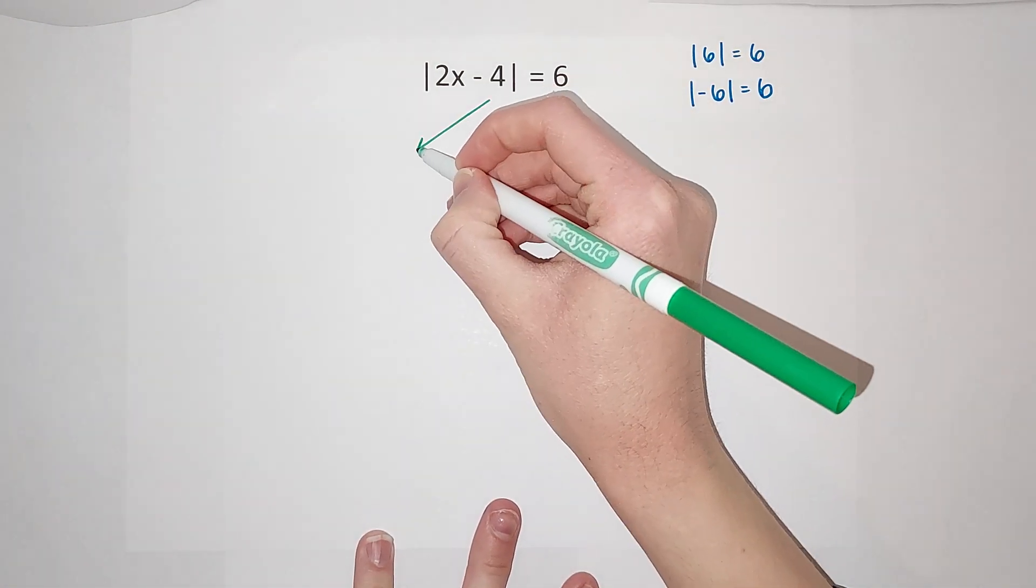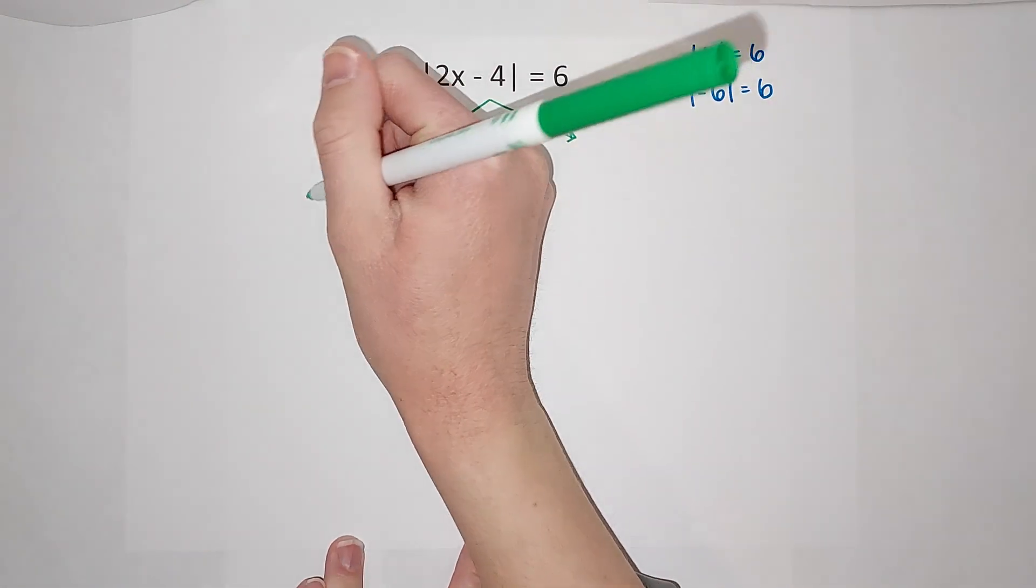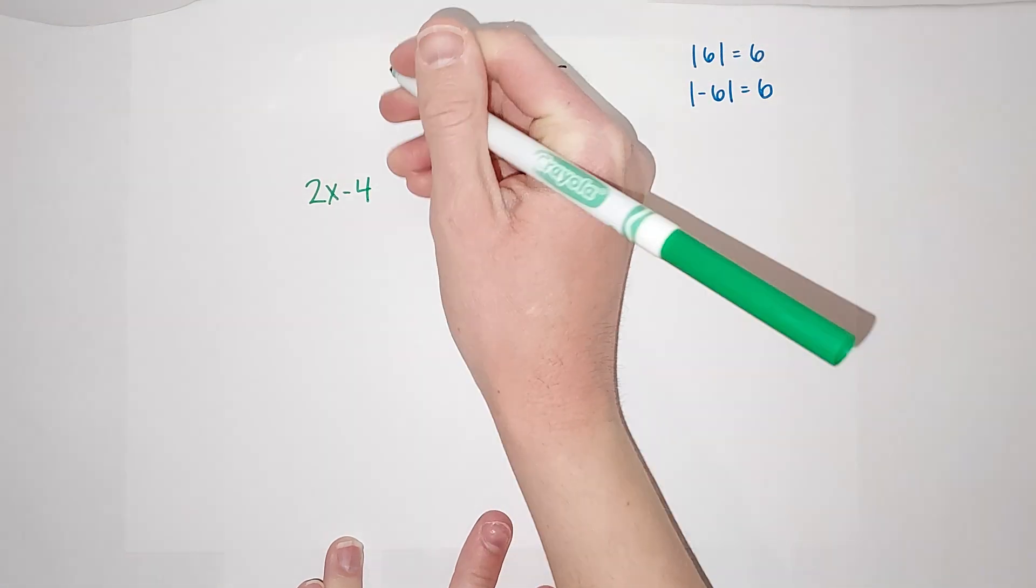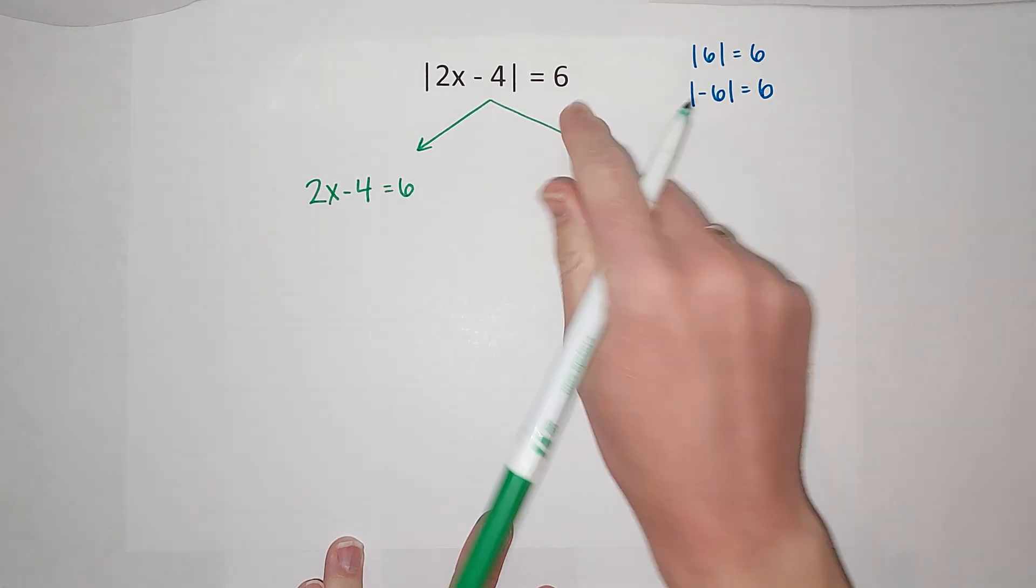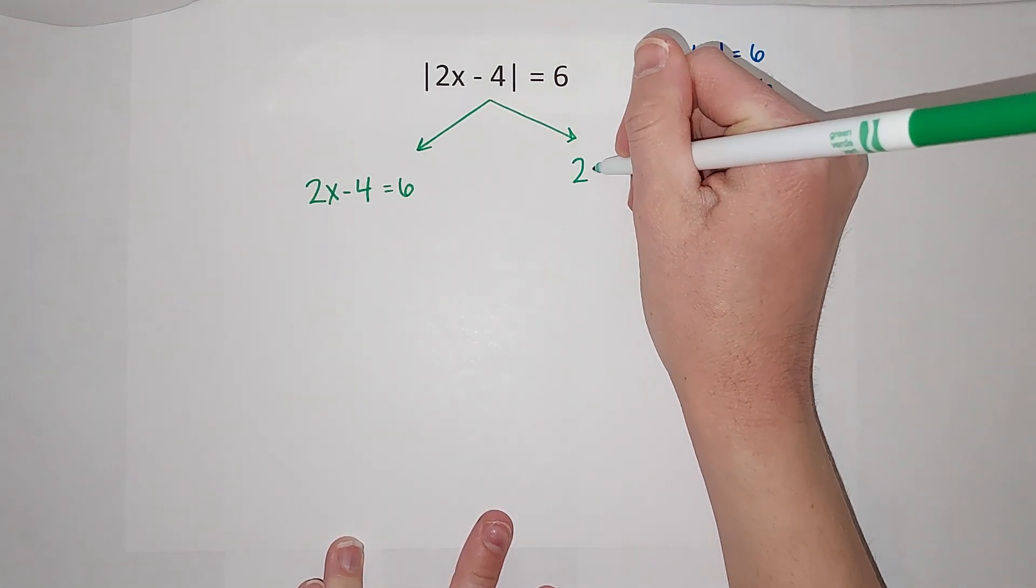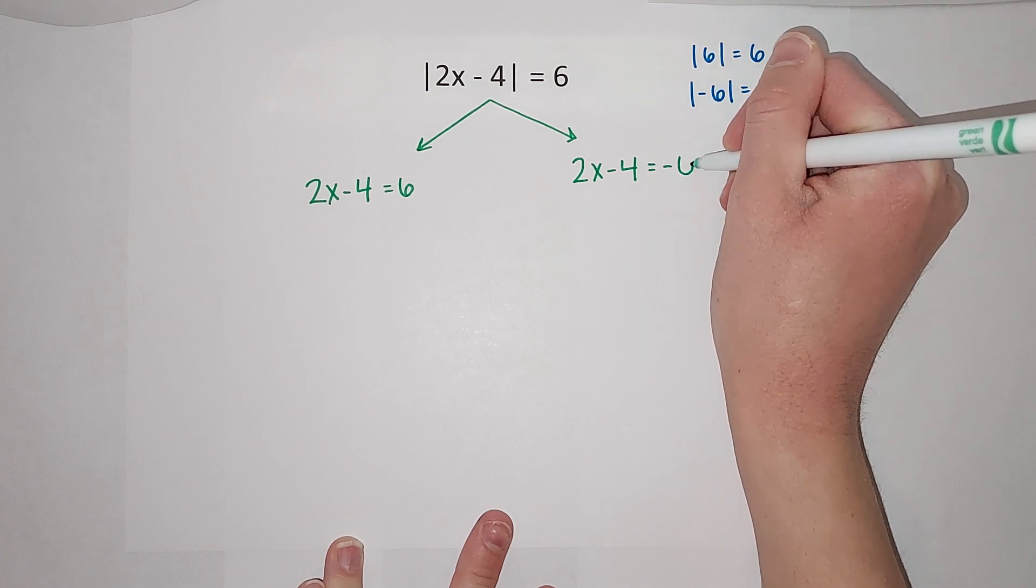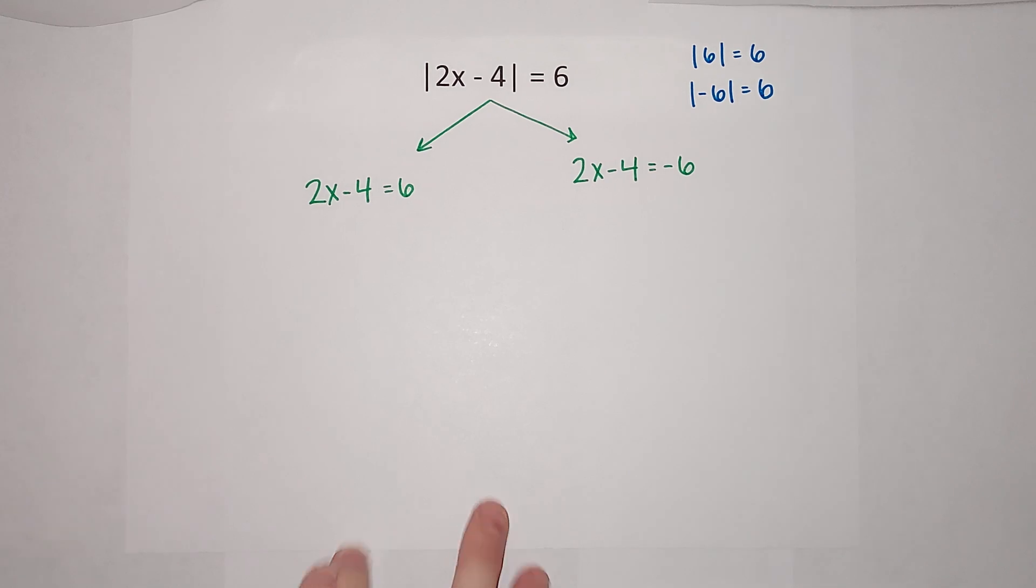Okay, inside of here two x minus four could be equal to six, right? Because absolute value of six is six. It could also - two x minus four could be equal to negative six because the absolute value of negative six is six.